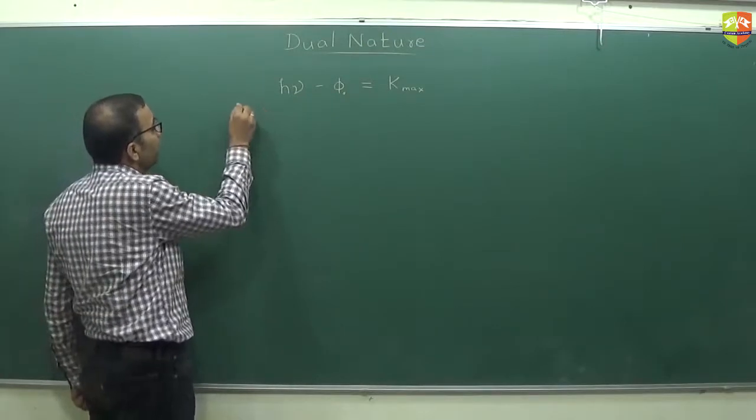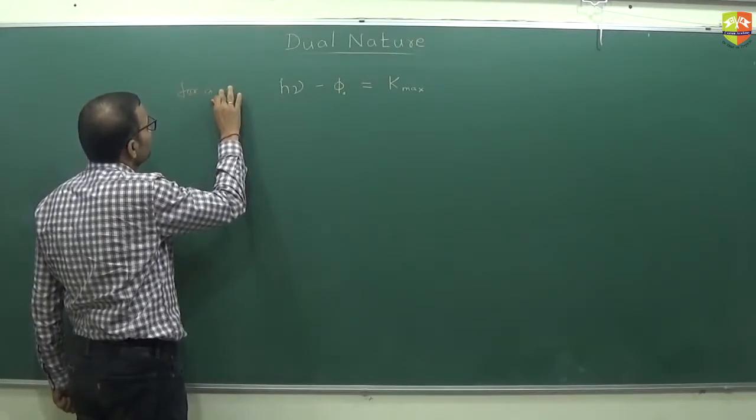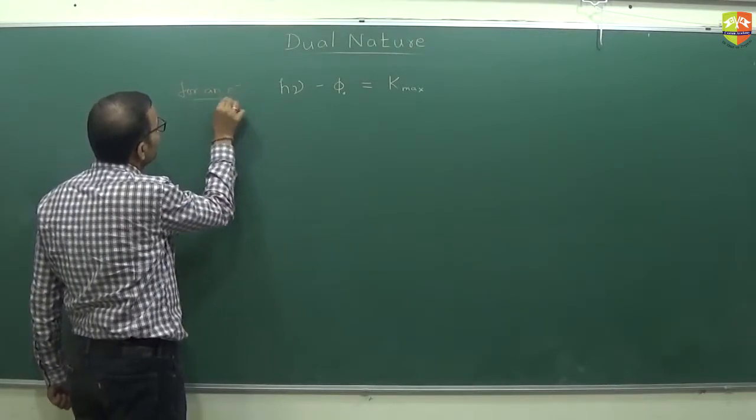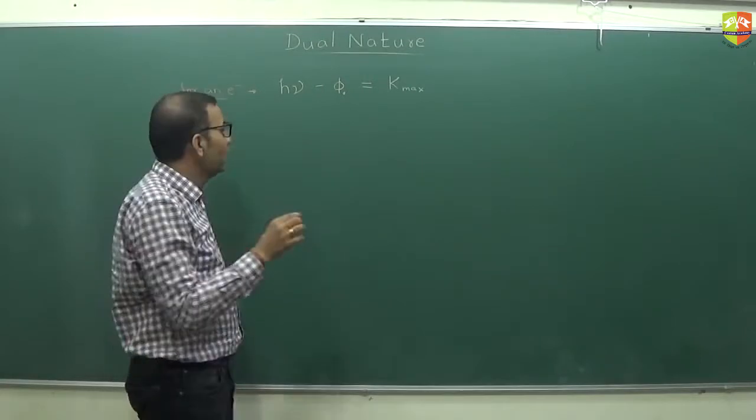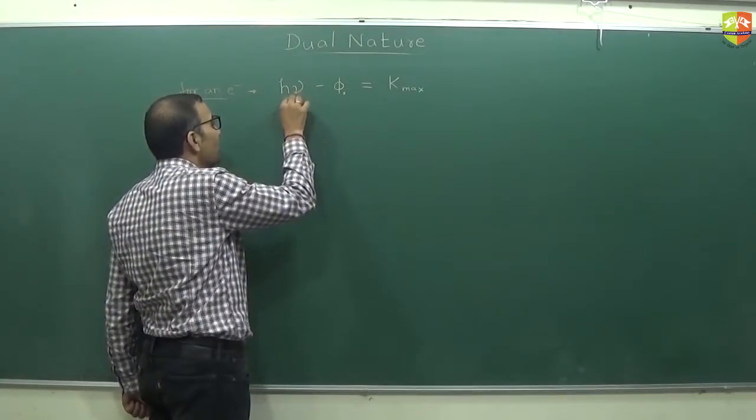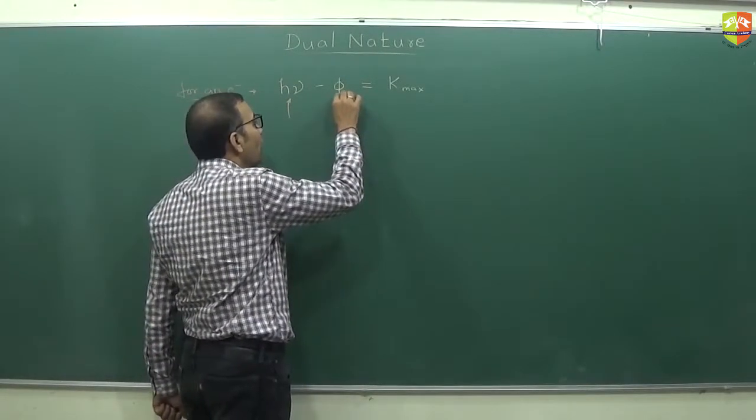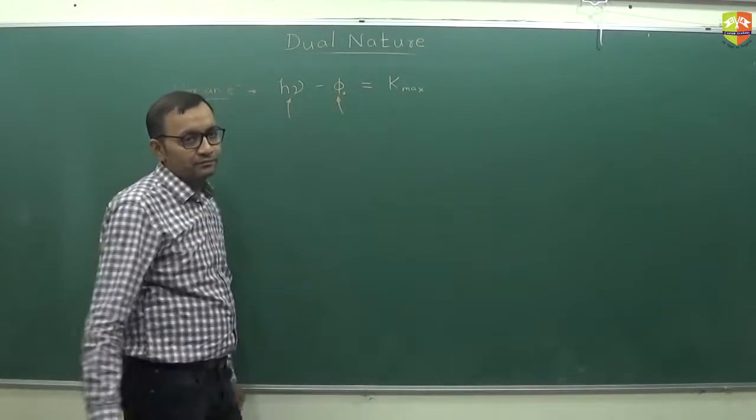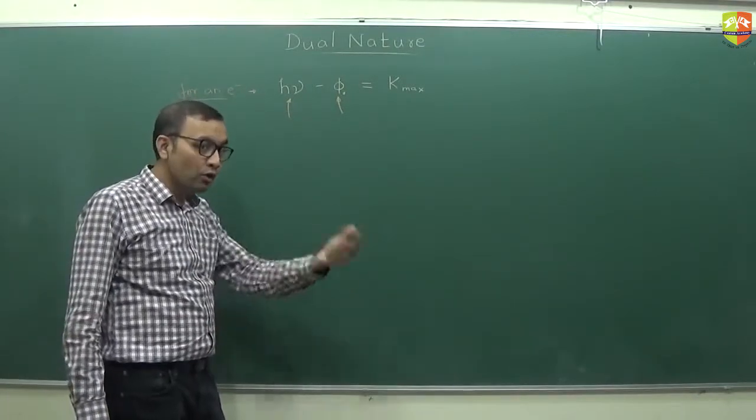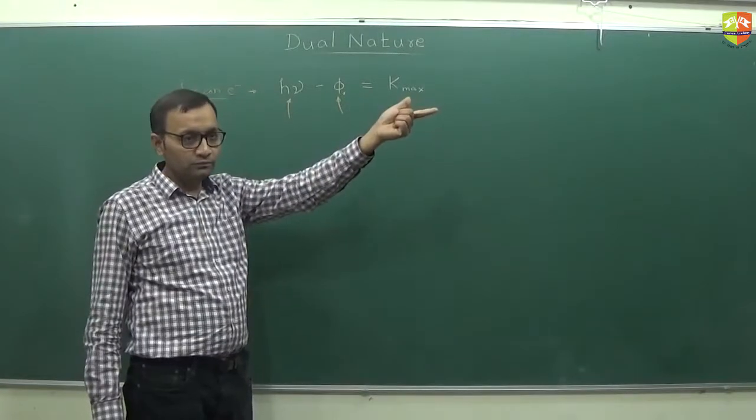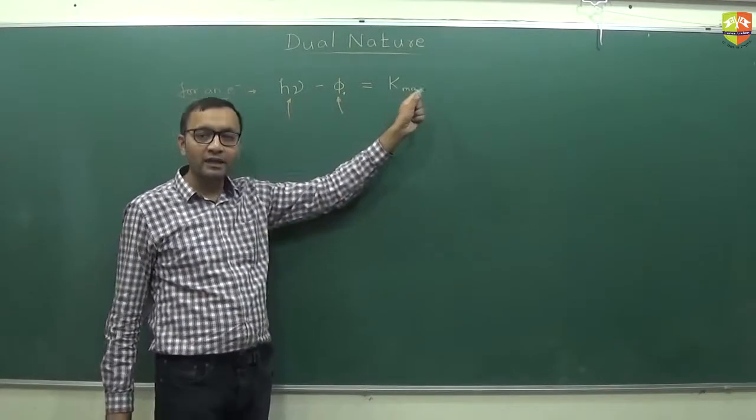This is for one electron, for a particular electron. What will happen? Electron will absorb a photon which has h into mu energy. And suppose it needs phi naught of energy to come out of metal surface. So if h into mu which it has absorbed is more than what energy it requires to come out which is phi naught, then the difference between them will become the kinetic energy of that electron.